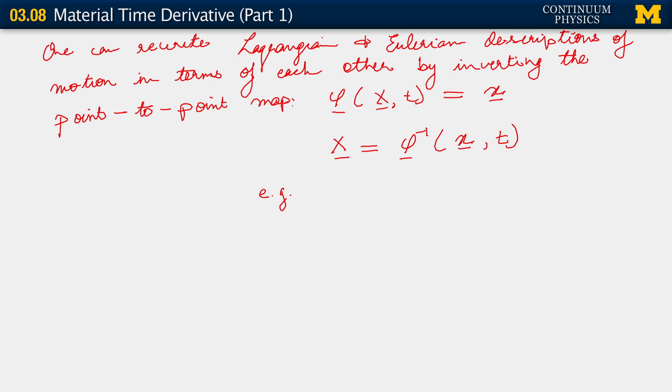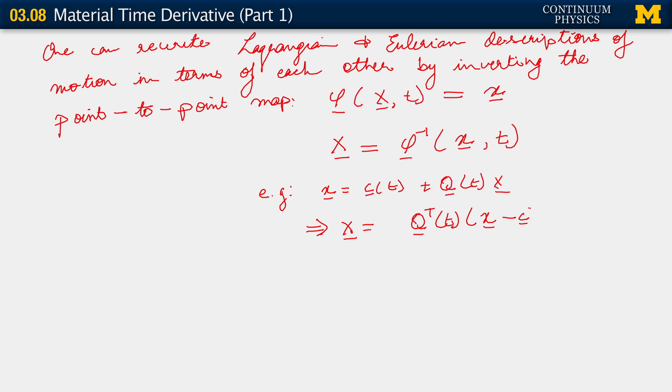Let me complete the statement: what we've done in the previous two segments was to observe that if x is c function of time plus Q function of time acting on X, we can always write back X equals Q transpose function of time acting on little x minus c. But like I've been saying, this is not the best way to go about things. What we need, in order to make possible a wide usage of this relation between Lagrangian and Eulerian descriptions and to go quickly between one and the other, is a way to write these two motions even when we don't invert the point-to-point map.